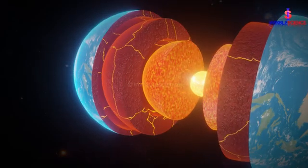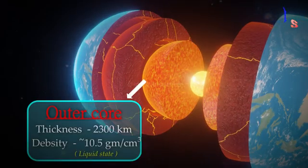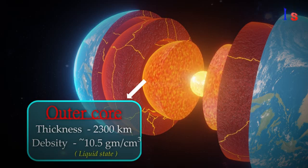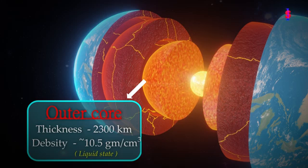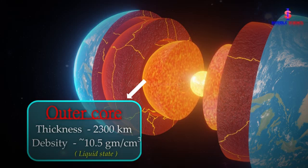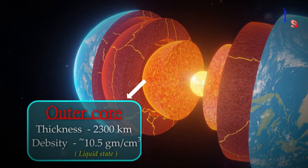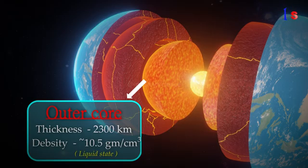It is made up of iron and nickel. It is so hot that it remains in a liquid state even after being made up of iron and nickel. This layer is approximately 2300 km thick.